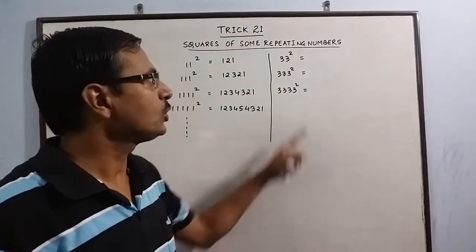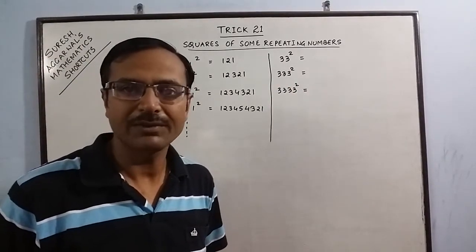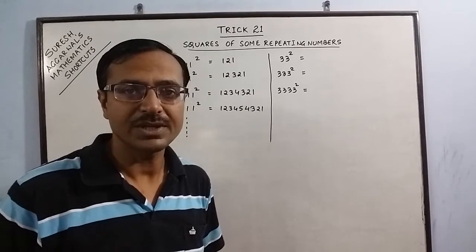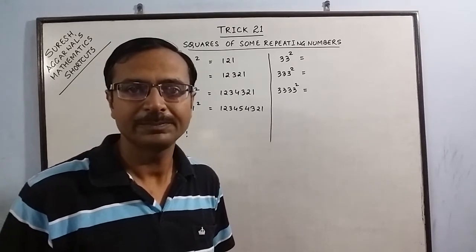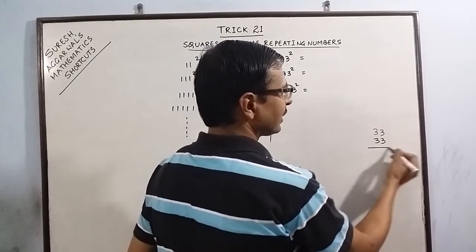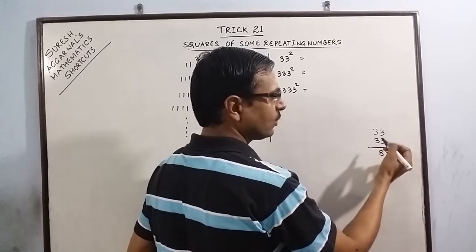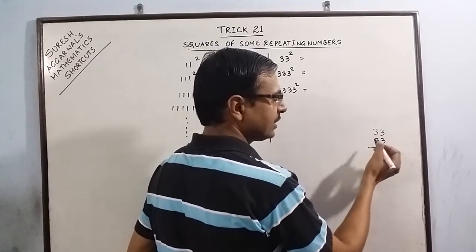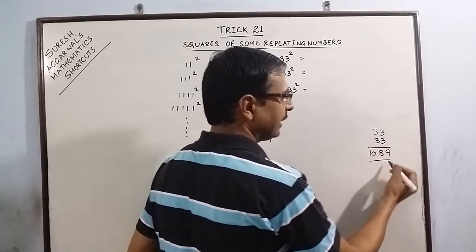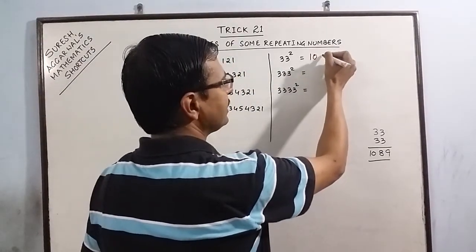The square of the 2-digit number can be found using vertically and crosswise, which I discussed in one of the videos earlier. Here, 33 into 33: 3 times 3 is 9, 9 plus 9 is 18, write 8 carry 1, 3 times 3 is 9 and 1 is 10. So 1089 is the square of 33.